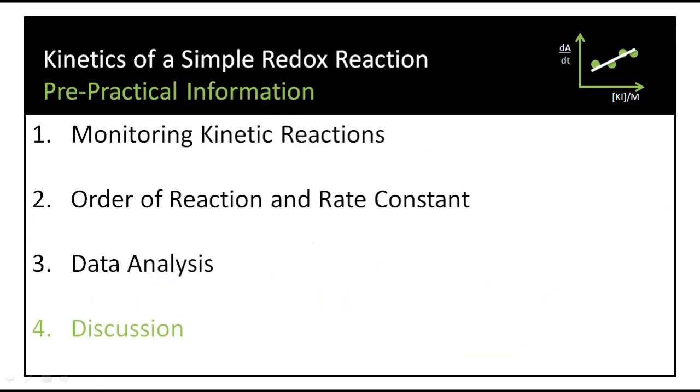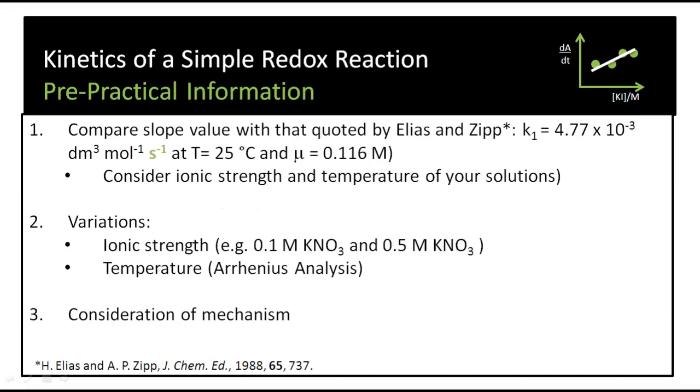In the discussion, then, we could think about things like comparing the slope value with that quoted in the paper provided. When you're doing this, you need to think about the ionic strength of your solution and the temperature of your solution. The experiment has several variations. For example, you may have varied ionic strength, doing it in 0.1 molar and 0.5 molar potassium nitrate, or you may have varied temperature. And with these in mind, you could consider the mechanism of reaction.